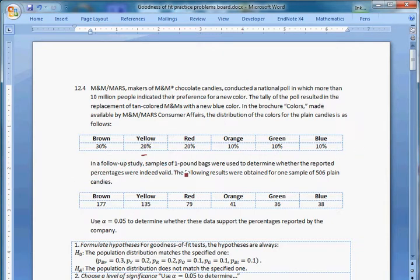In a follow-up study, samples of one-pound bags were used to determine whether the reported percentages were indeed valid. The following results were obtained for one sample of 506 plain candies: 177 were brown, 135 yellow, 79 red, 41 orange, 36 were green, and 38 of the 506 candies were blue.